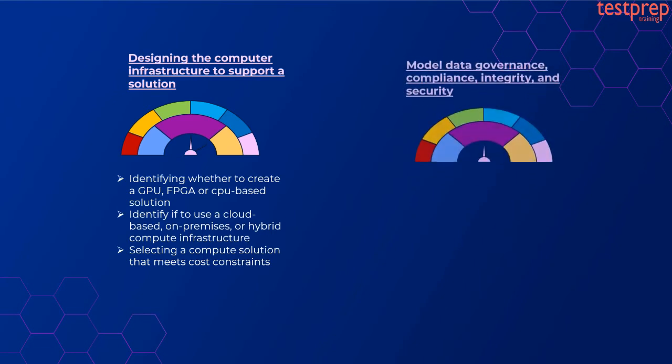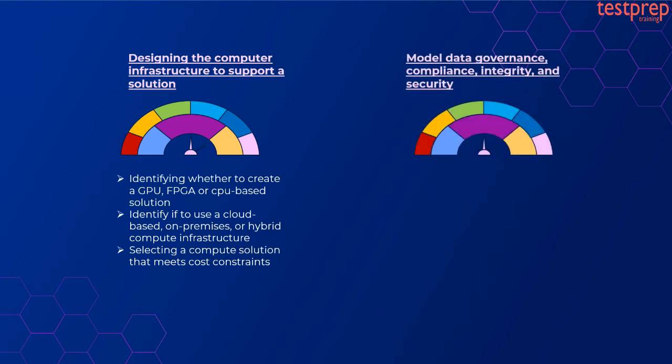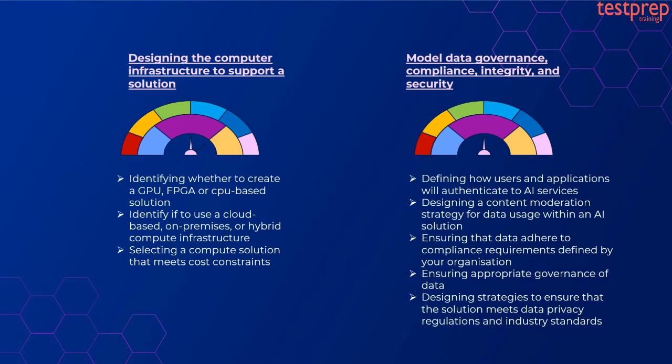Number five, model data governance, compliance, integrity, and security. It contains five subtopics: first, defining how users and applications will authenticate to AI services; second, designing a content moderation strategy for data usage within an AI solution; third, ensuring that data adhere to compliance requirements defined by your organization; fourth, ensuring appropriate governance of data; fifth, designing strategies to ensure that the solution meets data privacy regulations and industry standards.